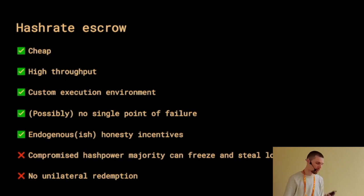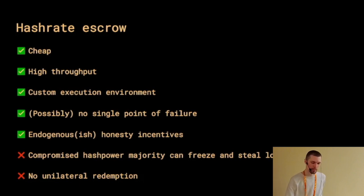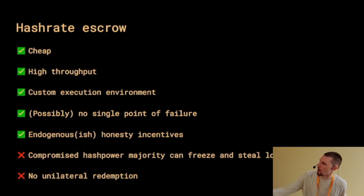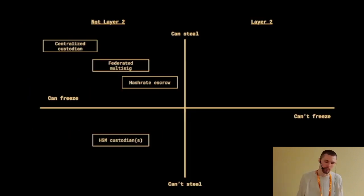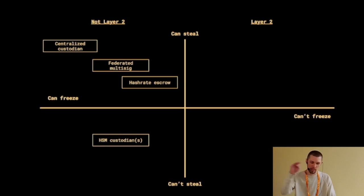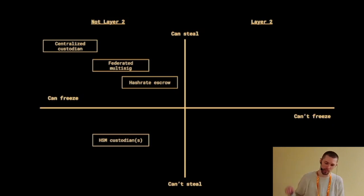We'll hold other questions to the end. Hash rate escrow also sits in the upper left quadrant, though we're getting closer to the 'can't freeze, can't steal' quadrant.